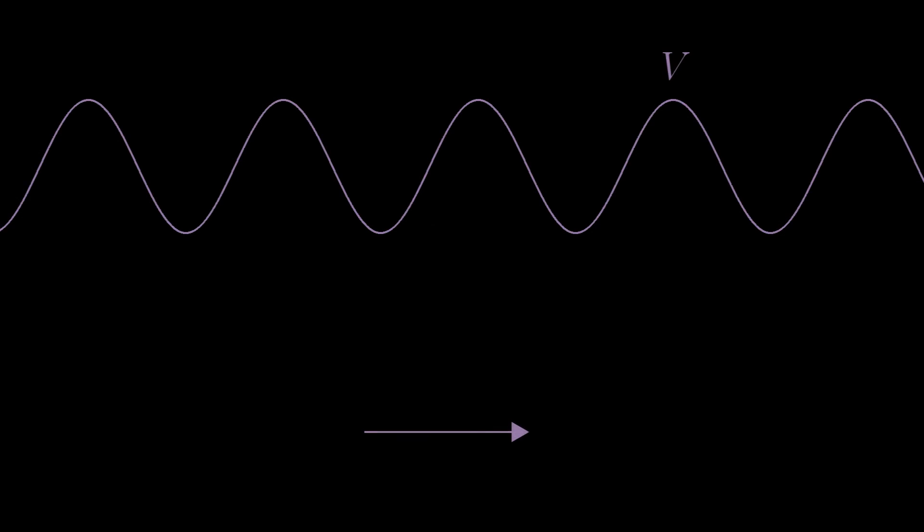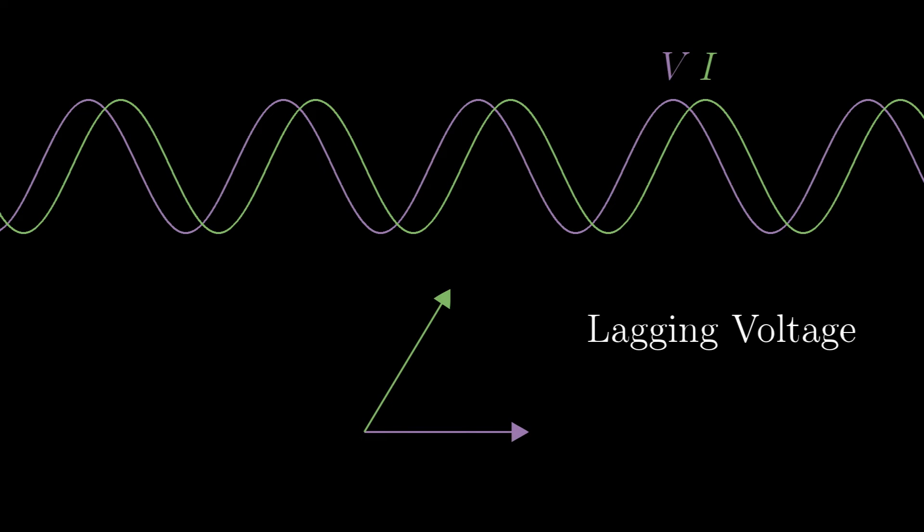Capacitors slow the change in voltage, so they make the voltage wave fall behind the current. They drag the voltage back, so the voltage is said to be lagging. When you see this, you know the line is capacitive.